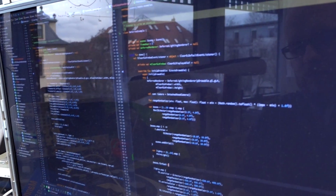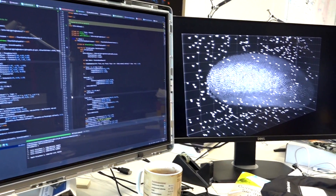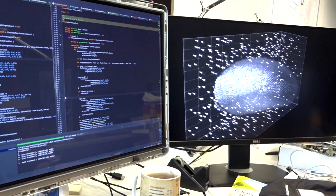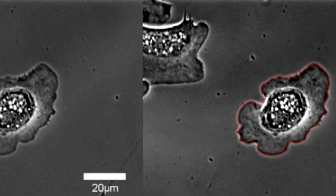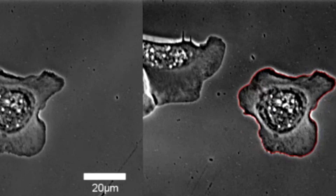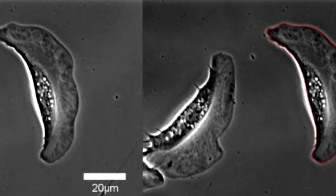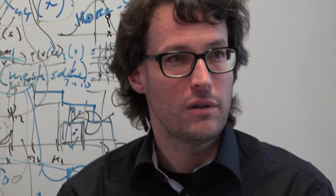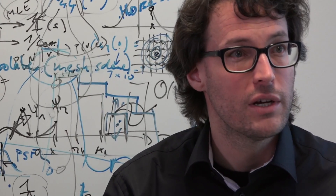Probably our most successful open source project is the MOSAIC suite for Fiji and ImageJ, which is a suite of image analysis algorithms for image segmentation, motion tracking, and spatial pattern analysis. Another tool is the parallel particle mesh library, or the PPM library, where the idea is that you write your simulation code as if it were to run on a single computer.